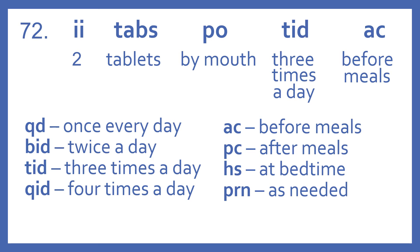Some other common SIG codes are: QD means once every day, BID is twice a day, TID is three times a day, QID is four times a day, AC is before meals, PC is after meals, HS is at bedtime, and PRN is as needed.